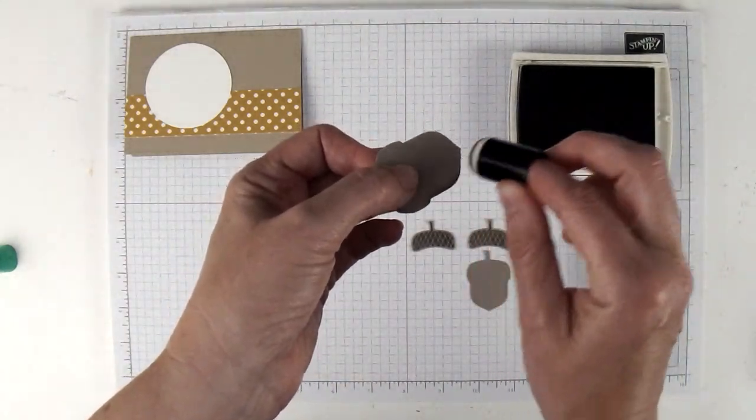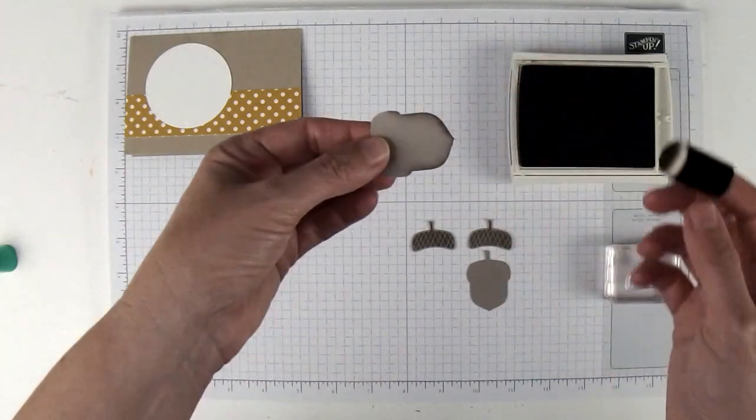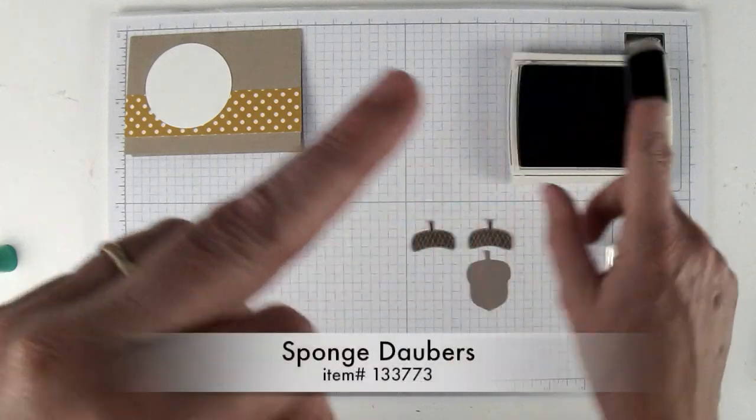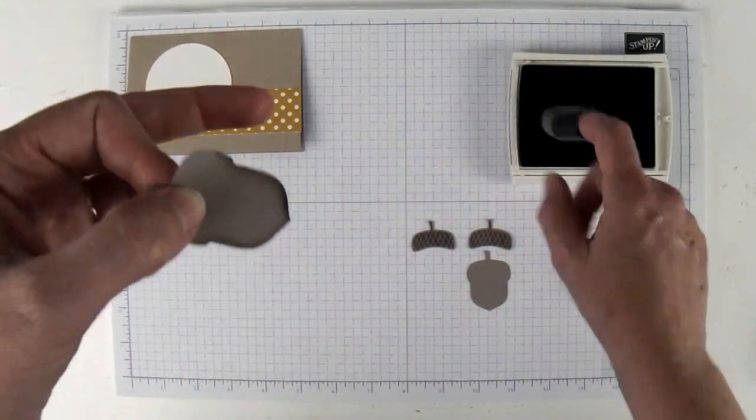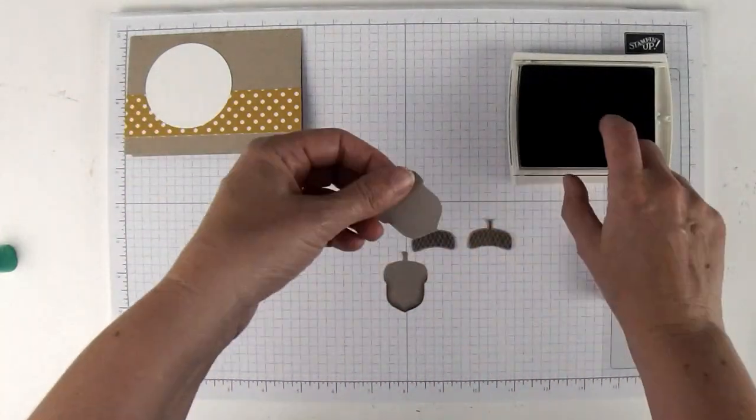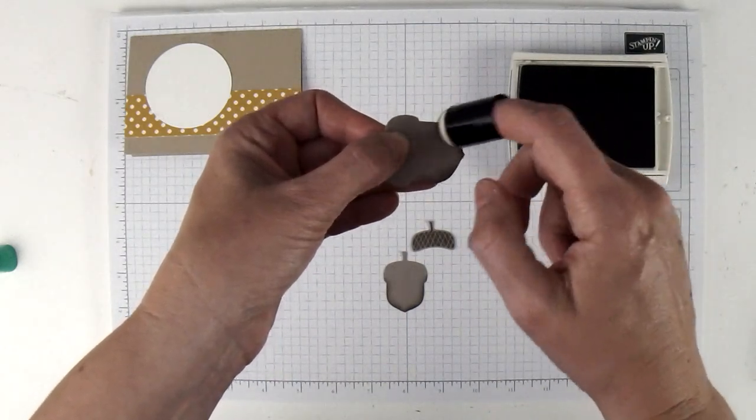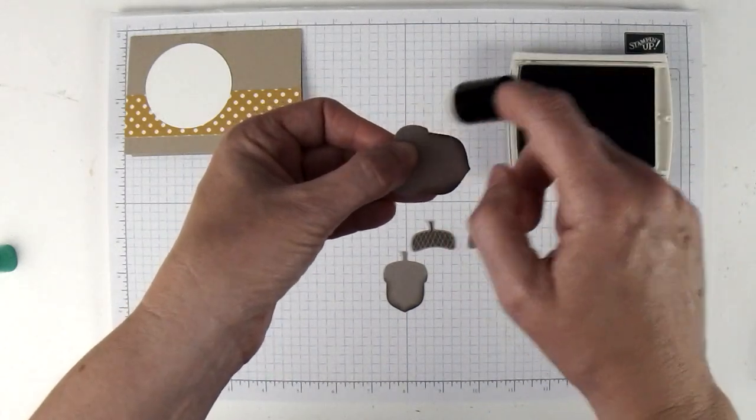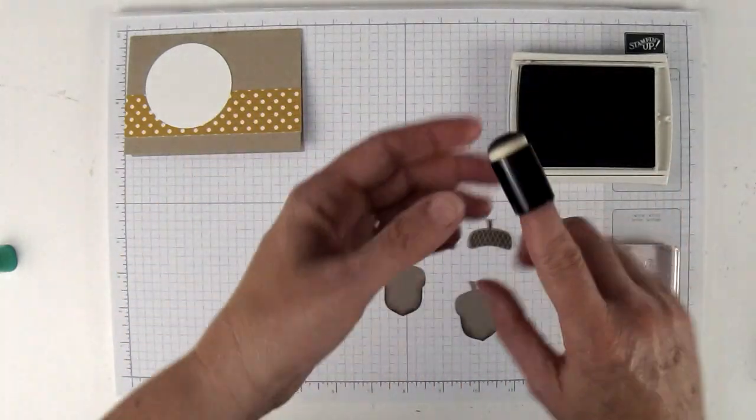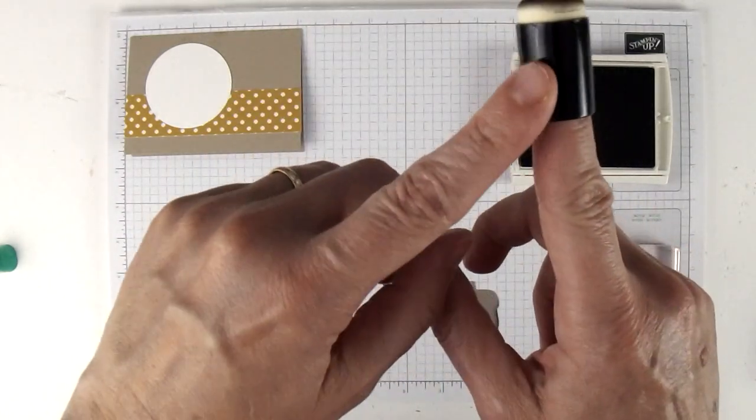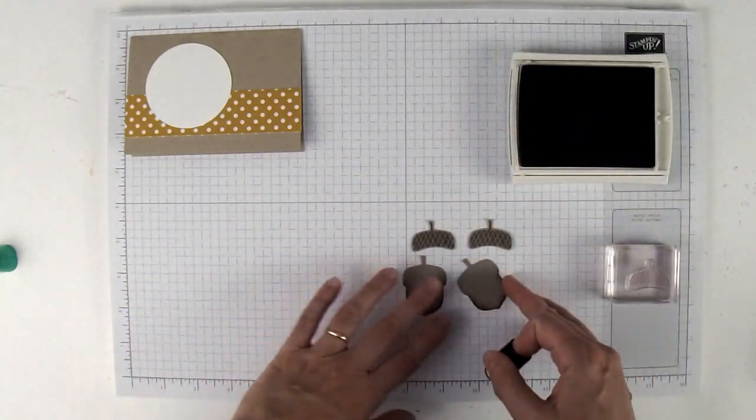Now we're going to sponge the bottoms of the big acorn. I like to sponge them because it will give it a little depth. This is my little sponge dauber and I'm just dipping it into the tip top taupe ink. I like to have a sponge dauber for every color that I use because I don't like to muddy my colors.